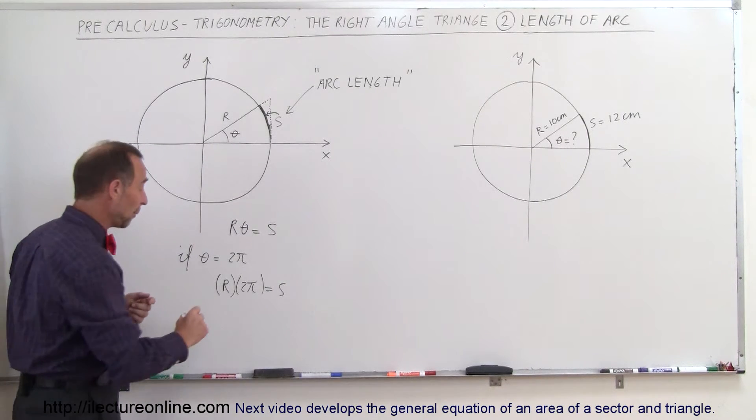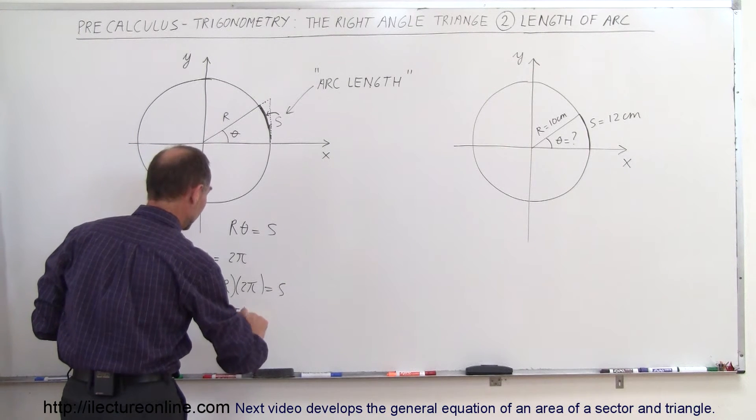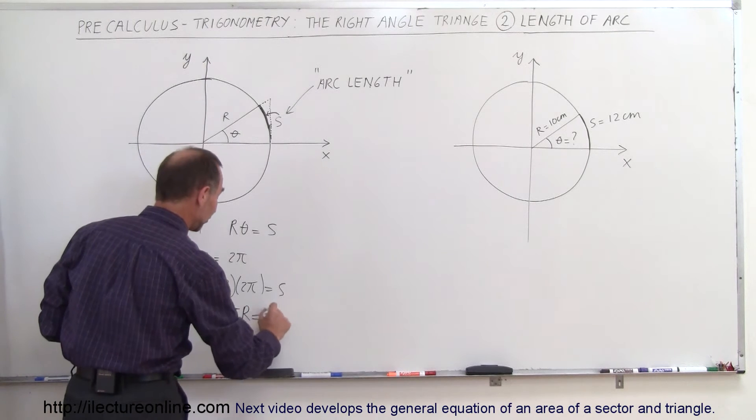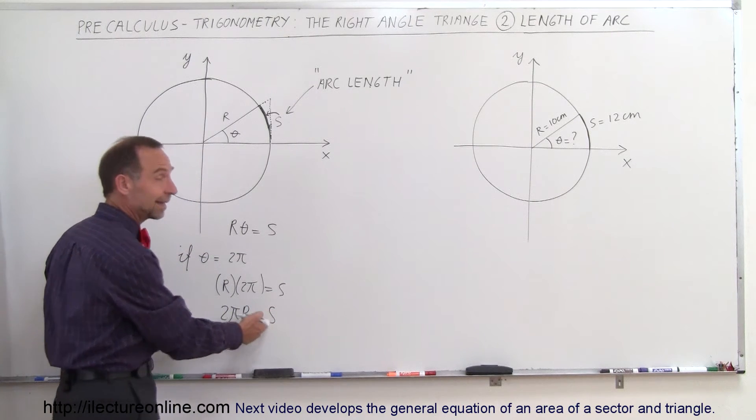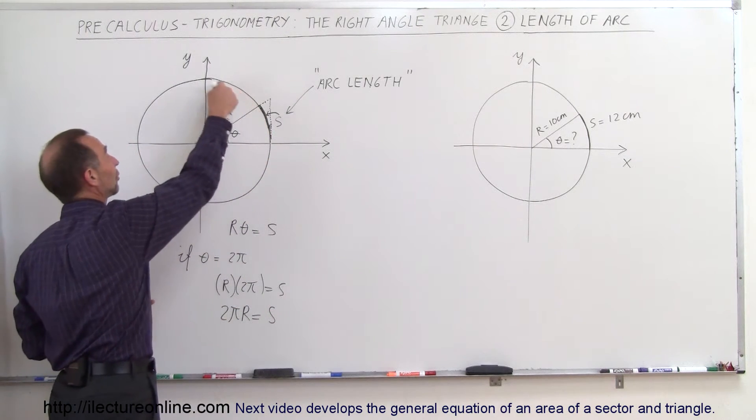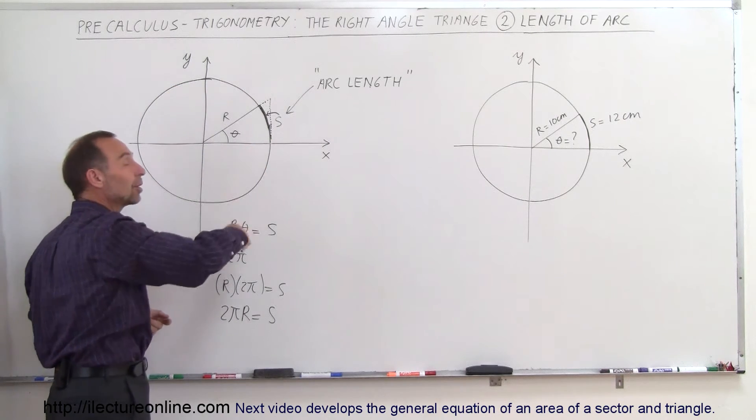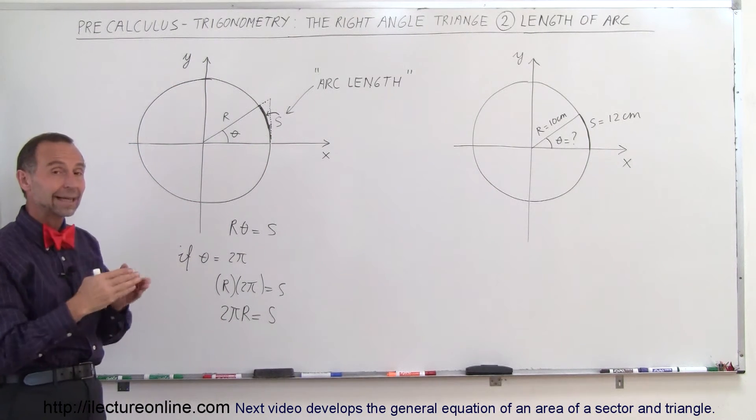And now if I reverse those two, if I write 2πR, most of us will recognize that as being the circumference of the circle, which means of course the arc length S along the edge of the circle, if the angle is 2π, would indeed be the complete circumference of the circle. So that's what we mean by the arc length.